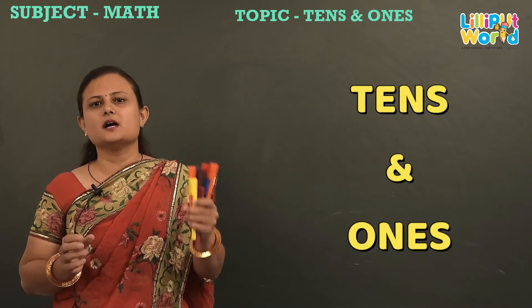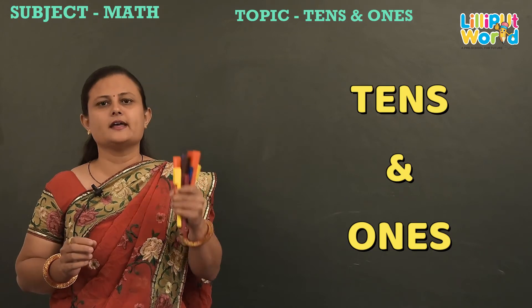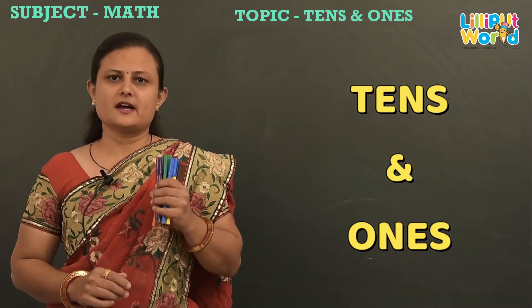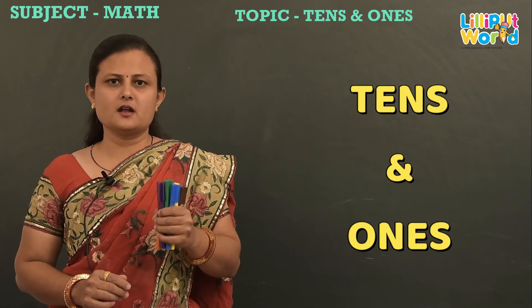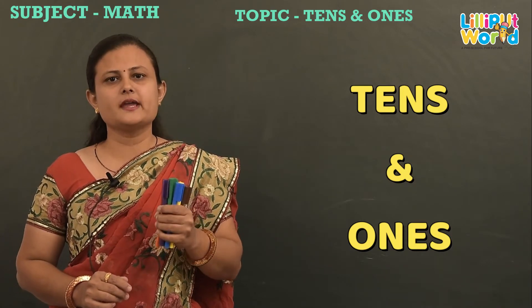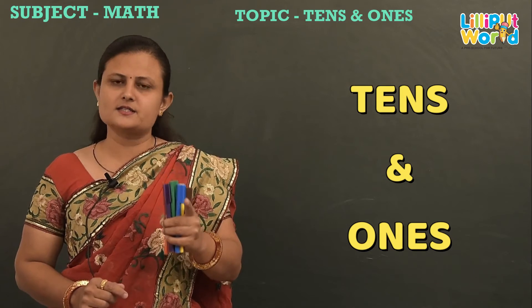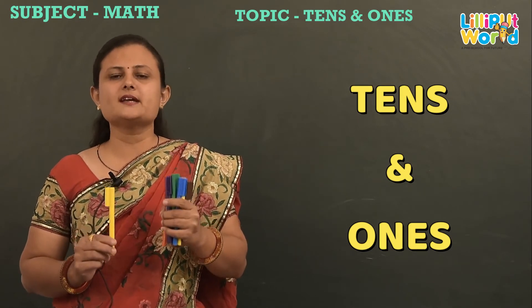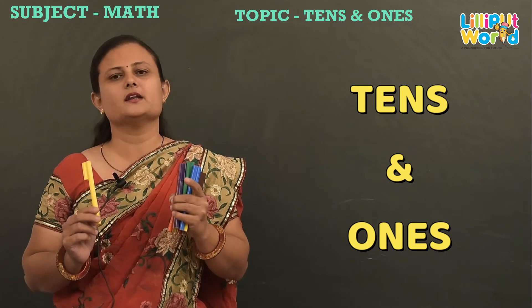This is the bunch of ten and it makes one ten. So now you know this is the bundle of ten, it makes one ten. So now you add one more, it makes ten and one, eleven.